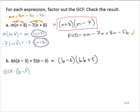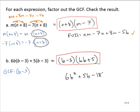Let's check to make sure that's correct — I'll box it in red. Using FOIL: b times 6b is 6b squared; outers, b times 5 is 5b; inners, negative 3 times 6b is minus 18b; last, negative 3 times 5 is minus 15. We do have some like terms, so that gives us 6b squared minus 13b minus 15.